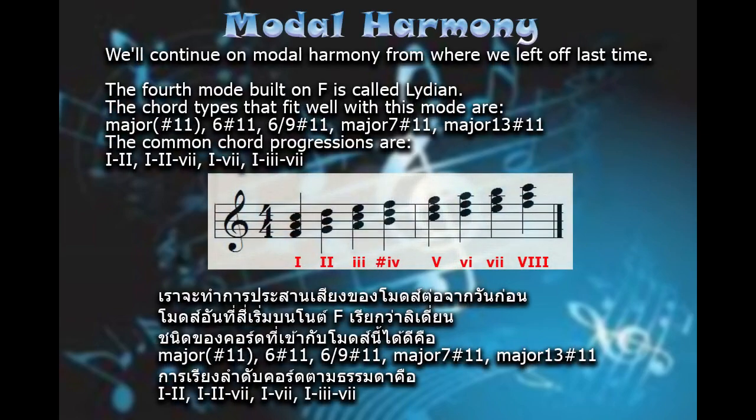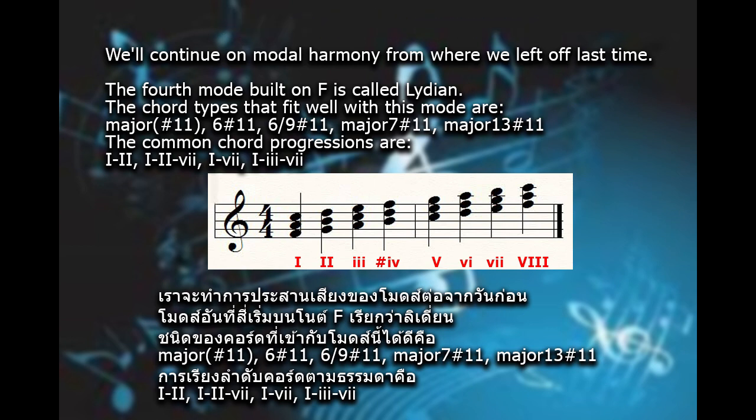We'll continue on modal harmony from where we left off last time. The fourth mode built on F is called Lydian. The chord types that fit well with this mode are major sharp 11, 6 sharp 11, 6 and 9 sharp 11, major 7 sharp 11, major 13 sharp 11. The common chord progressions are first-second, first-second-seventh.